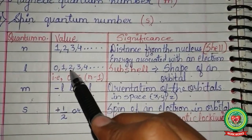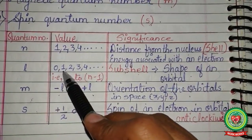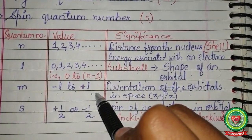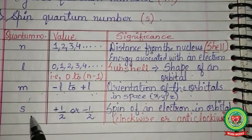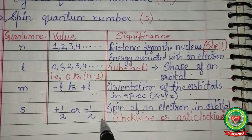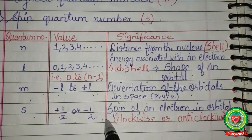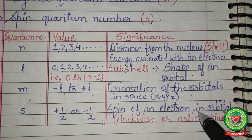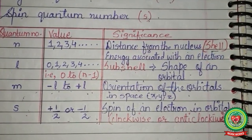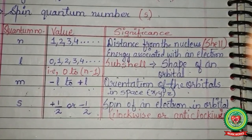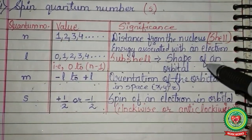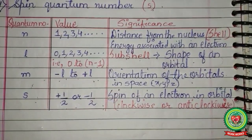The orientations of orbitals are given by the magnetic quantum number m, whose value ranges from −l to +l. For example, if l = 1, m will be −1, 0, +1. The spin quantum number is given by +½ or −½, representing the clockwise or anti-clockwise spin of an electron.